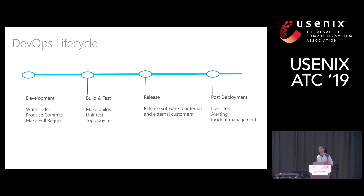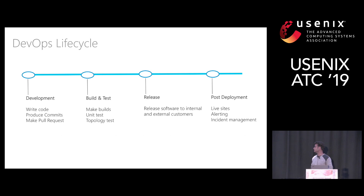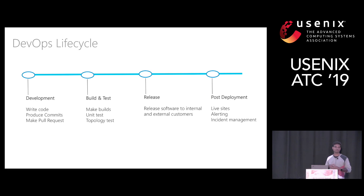Just to set some context, let's take a quick look at a typical DevOps lifecycle. On the extreme left, the development phase comes where developers write code, produce commits, make pull requests, and push changes. Then comes the build and test phase where the code is baked into a build and a battery of tests ranging from unit to integration tests are run. Then comes the release phase, followed by the post-deployment phase where health of the services are monitored closely and any anomalies detected are mitigated and fixed.